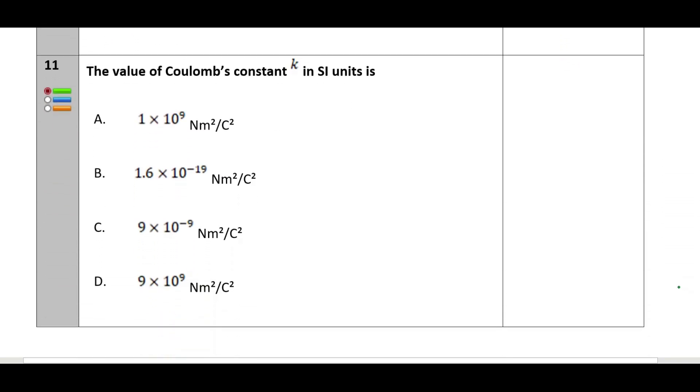Question number 11: the value of Coulomb's constant. This should be an easy option. The K value is 1/(4πε₀) which equals 9 into 10 power 9 newton meter per coulomb square. The option will be D.